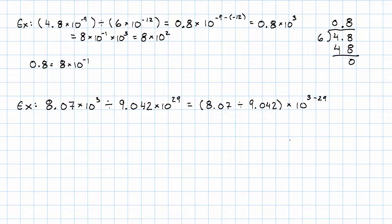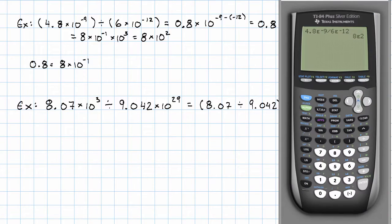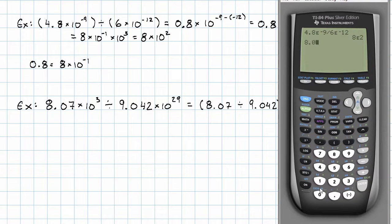Well, we'll have 8.07 divided by 9.042 times 10 to the 3 minus 29. Okay, so I'm going to put my calculator back in normal mode. And I'm going to take that 8.07 divided by 9.042.